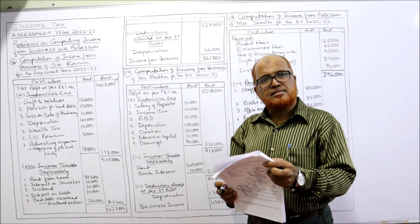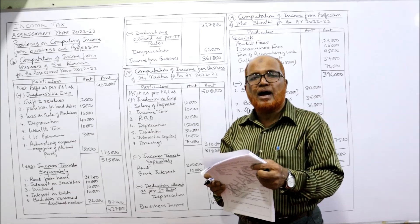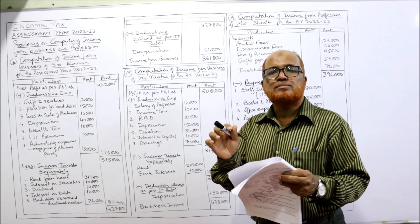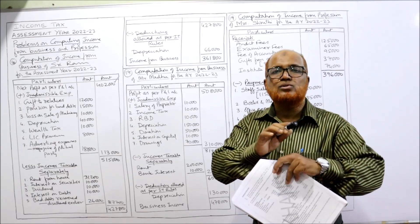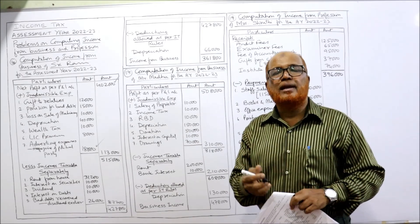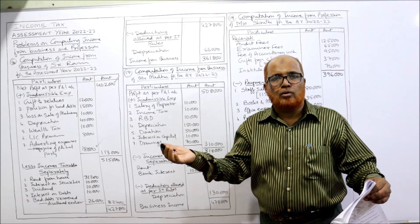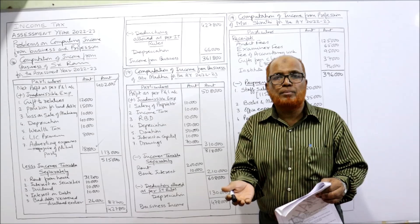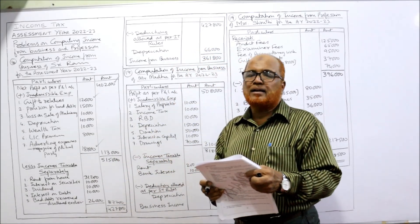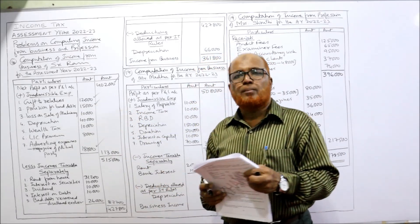Salaries, general expenses, discount, brokerage, and legal expenses are all allowed as deduction. Advertising expenses of 18,000 debited to the profit and loss account are disallowed because the advertisement was in a magazine published by a political party. Gifts to relatives — 12,000 — are disallowed as a personal expense. Bad debts are allowed as deduction, but provision for bad debts is disallowed.